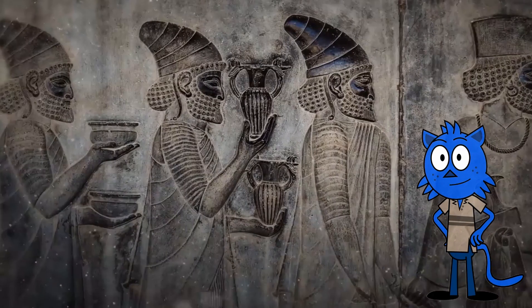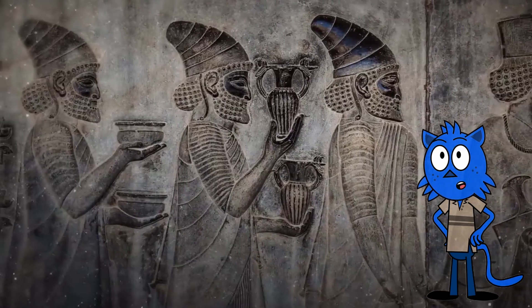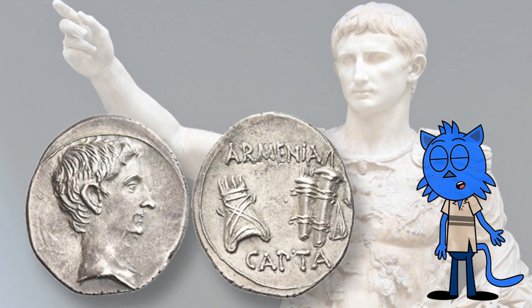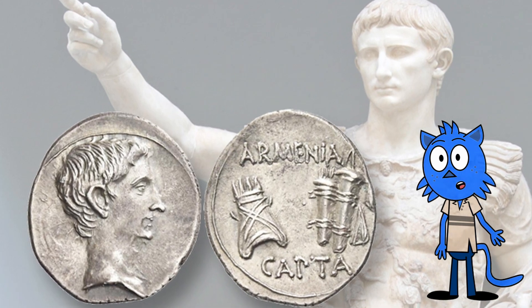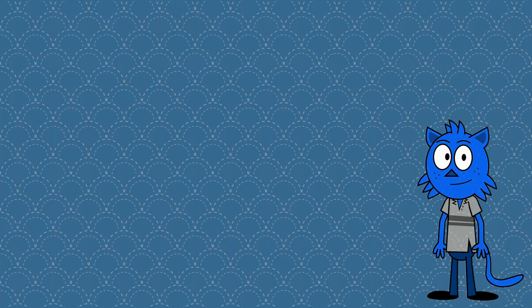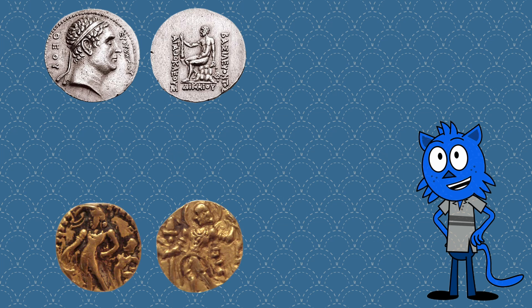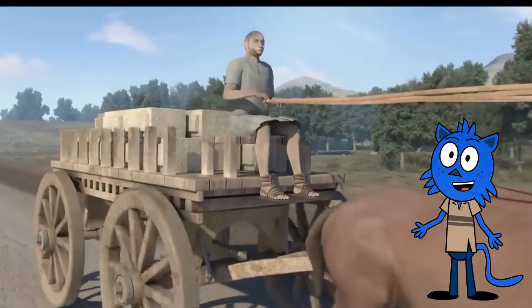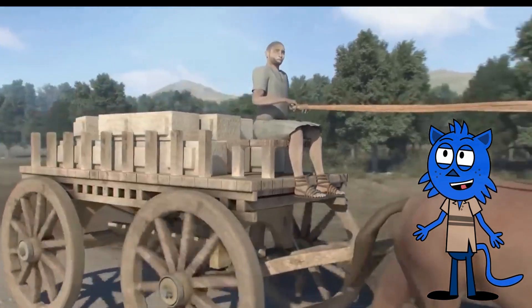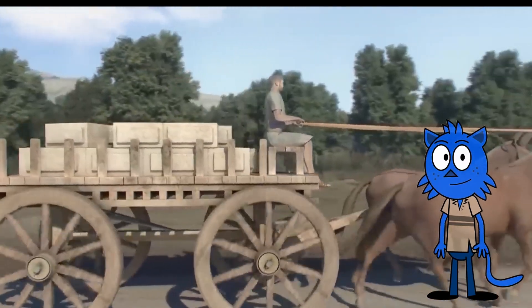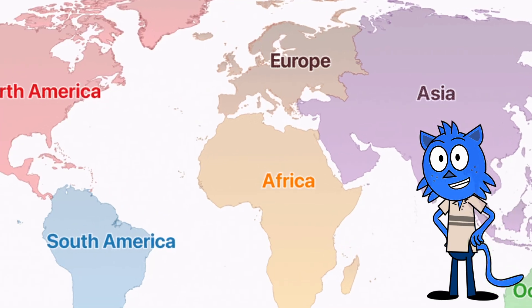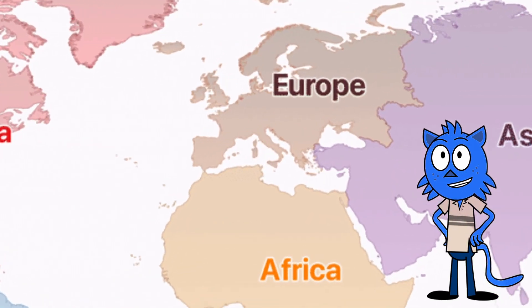As empires grew, so did the need for a more controlled and standardized form of money. The Romans were renowned for their silver denarius, which circulated for almost four centuries. Fast forward to the Middle Ages — coins continued to be the primary form of currency. But as trade networks grew, carrying large quantities of coins became impractical, which led to the development of paper money and banknotes in China around the 7th century, a revolution in money that wouldn't reach Europe until the 17th century.